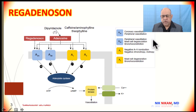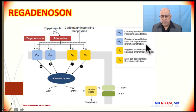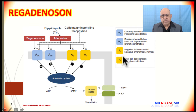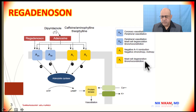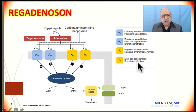Adenosine 2B is primarily located in the peripheral vascular system. It also dilates the peripheral arteries, causes degranulation of the mast cells, and causes bronchoconstriction. Adenosine 3 receptor, just like adenosine 2B, causes degranulation of the mast cell and bronchoconstriction.